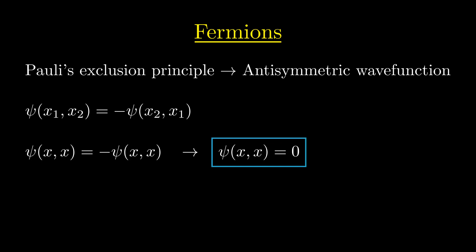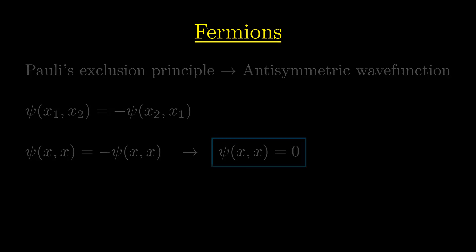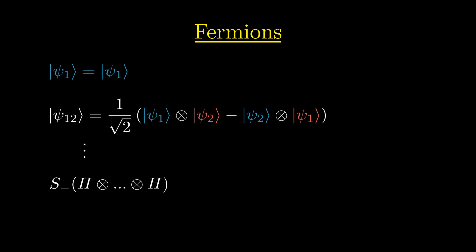In other words, the probability that we find the two particles at exactly the same position is zero. Thus, instead of symmetrizing our multiparticle wavefunction, we can anti-symmetrize it in the following way. We denote this as the S_- of the product of Hilbert spaces H.